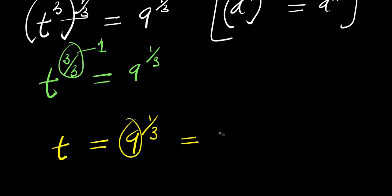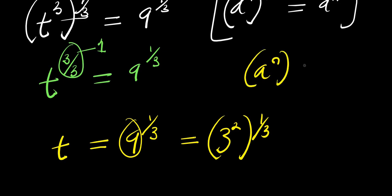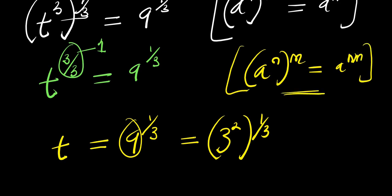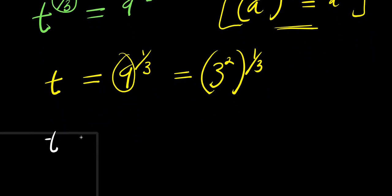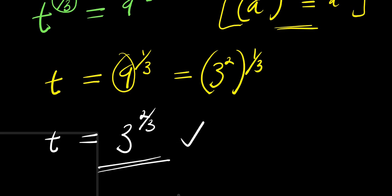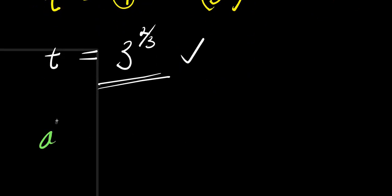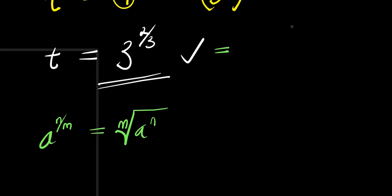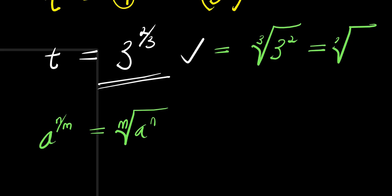And from here, nine is a perfect square, which is three power two raised to the power of one-third. So from here, applying the rule a power n raised to the power of m equals a power n times m, I will simply have t equals three power two times one-third. This becomes our answer. If you have a power n over m, this equals the m-th root of a power n. So this simply means we are having the cube root of three power two. And three power two is nine, so this means we are having the cube root of nine.